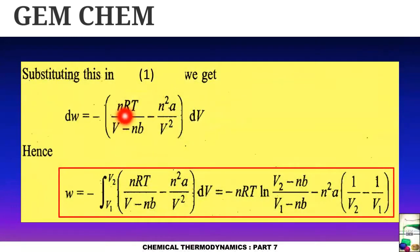Now we will substitute this value in this formula. Substituting this in equation one, we get this kind of expression. Now on integrating both sides over V1 and V2, for this side we get the ultimate expression of volume which is minus nRT ln V2 minus nb divided by V1 minus nb minus n square a multiplied by 1 by V2 minus 1 by V1.